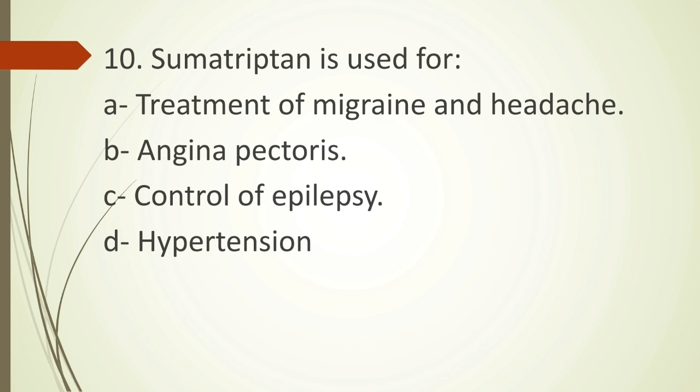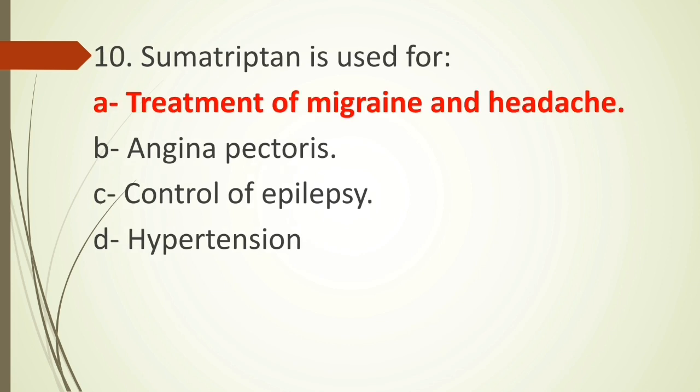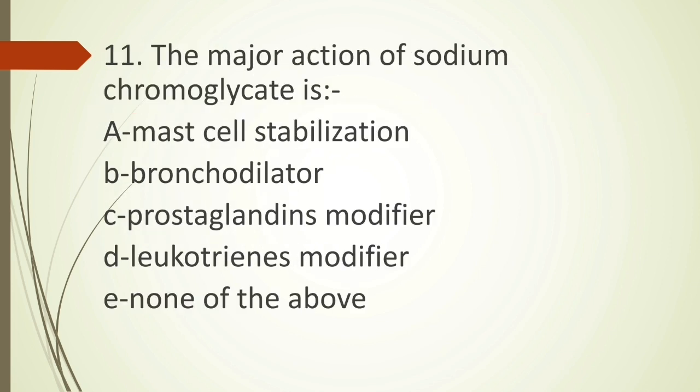Tenth question: sumatriptan is used for — option A treatment of migraine and headache, option B angina pectoris, option C control of epilepsy, option D hypertension. Sumatriptan is a drug mainly used for the treatment of migraine headache. The correct answer is option A, treatment of migraine and headache.